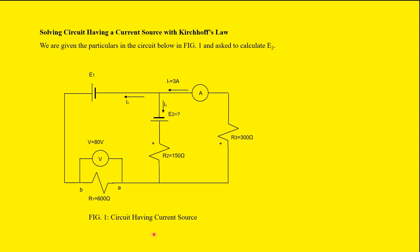Figure 1 has a current source given as I1 equal to 3 amps. We are given a resistor R1 at 600 ohms with a voltage drop of 80 volts. We are given R2 at 150 ohms and R3 at 300 ohms, and we are asked to calculate E2.